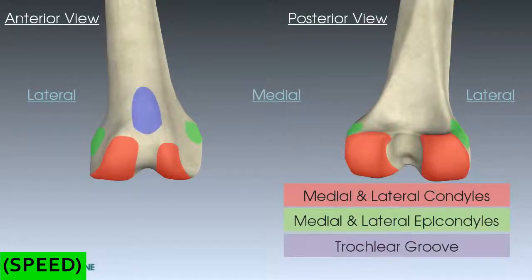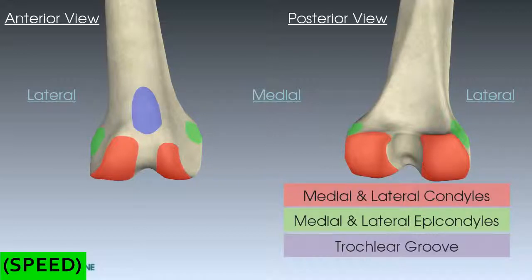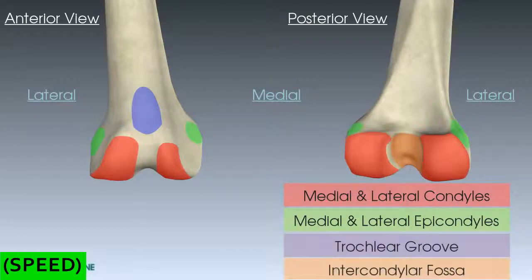The trochlear groove has been assigned various names including the trochlear notch, patellar groove, and the femoral sulcus, but they all mean the same thing — it's primarily referred to now as the trochlear groove. Finally, on the posterior view there is an intercondylar fossa, a depression between the two femoral condyles that provides attachment points for the anterior and posterior cruciate ligaments.